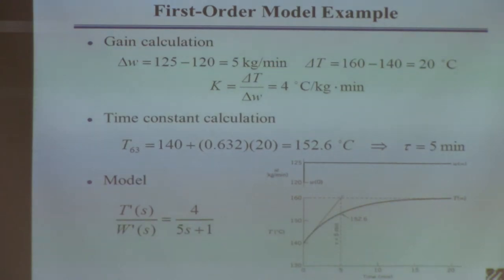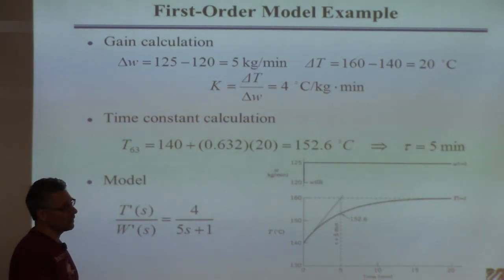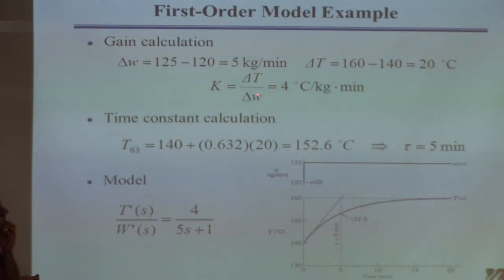First you calculate the gain. You calculate delta U and delta Y. Delta U is the amount you change the inlet flow: 125 minus 120 is 5 kilograms per minute. Everything is deviation variable. The mistake people make is they want to use 125 for W - it's not 125, it's 5. Then you calculate how much the output changed. According to the plot, it started at 140, ended up at 160, so it changed by 20. The gain is just dividing these two together. The units are always units of the output divided by units of the input. So K = ΔT/Δw = 4°C·kg·min, meaning every time I change the flow one kilogram per minute, I increase the temperature by four degrees.